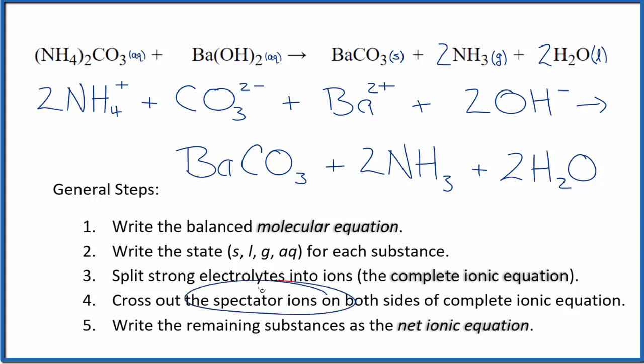At this point, we would cross out spectator ions. But everything is different in the reactants and products, so there's really no spectator ions here that we can cross out. So the complete ionic equation is the same as the net ionic equation.